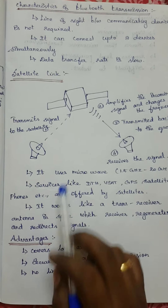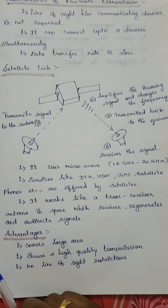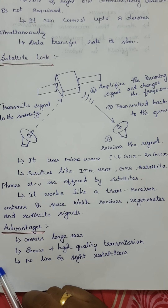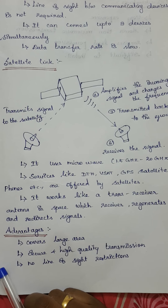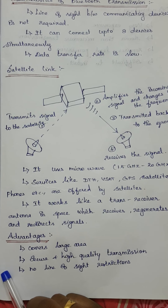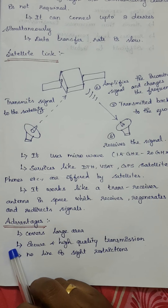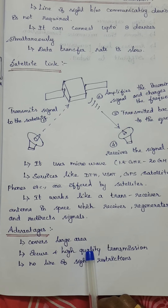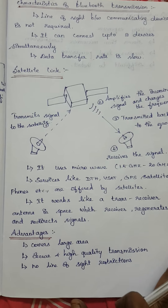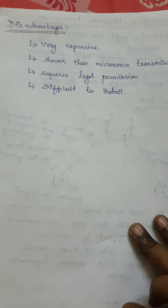The advantages of using a satellite link: it can cover a very large area, and it provides secure and high-quality transmission. There are no line-of-sight restrictions — unlike terrestrial systems that may be blocked by mountains or tall buildings, satellites are unaffected by such obstacles.